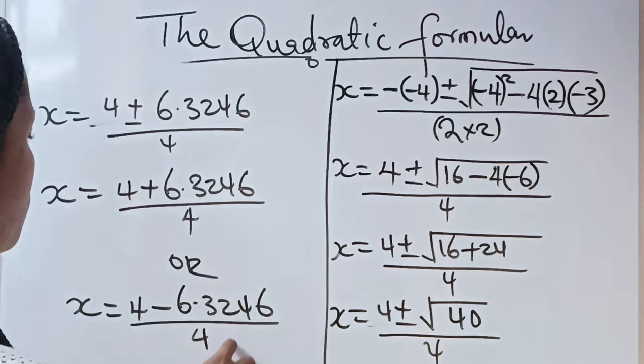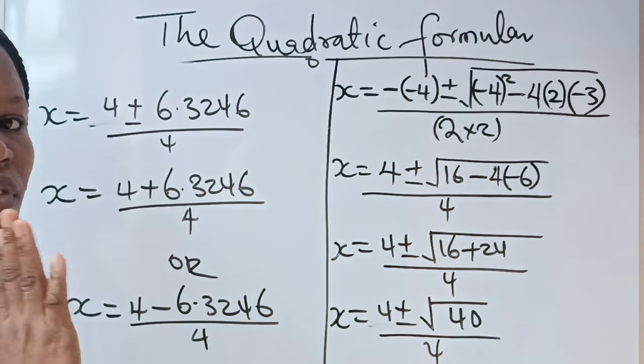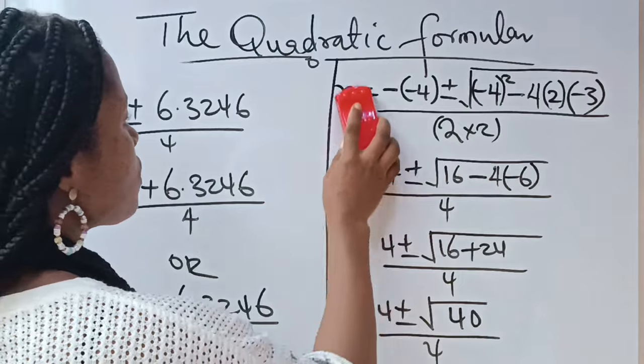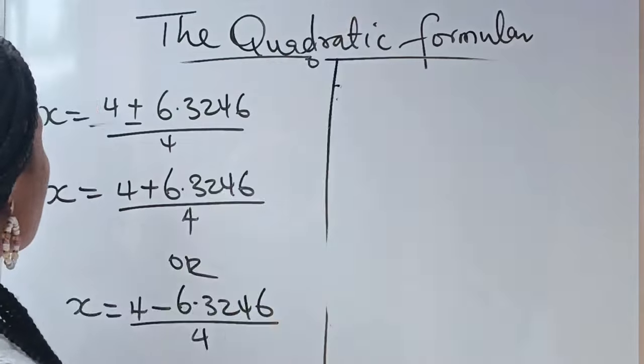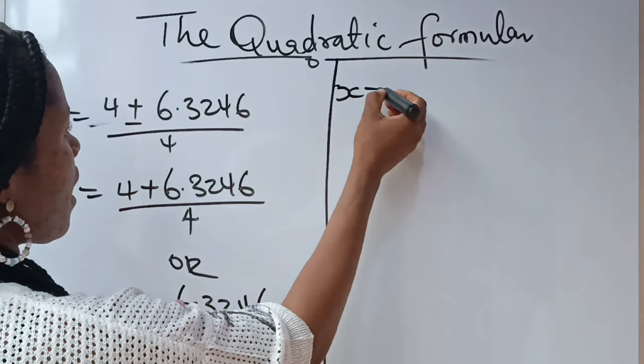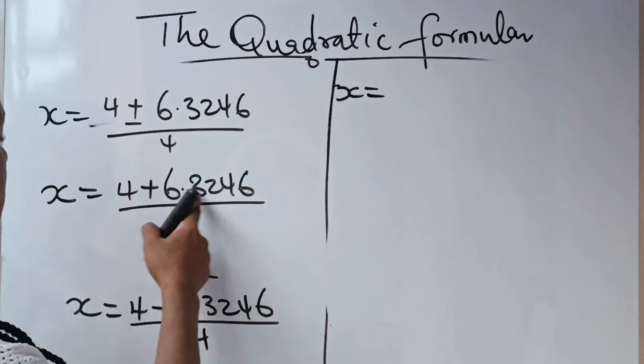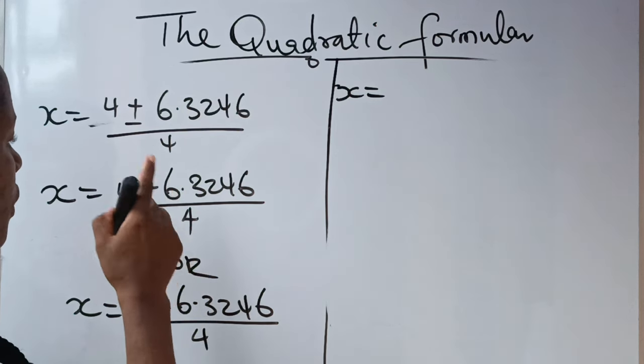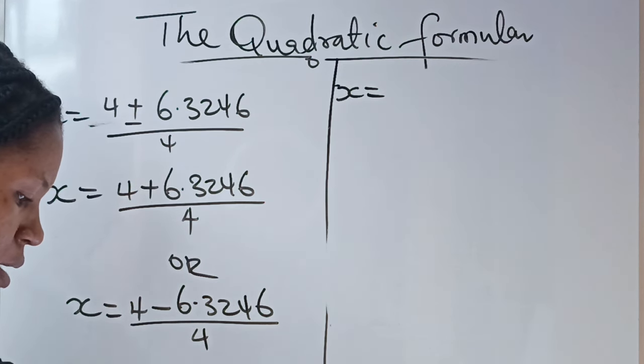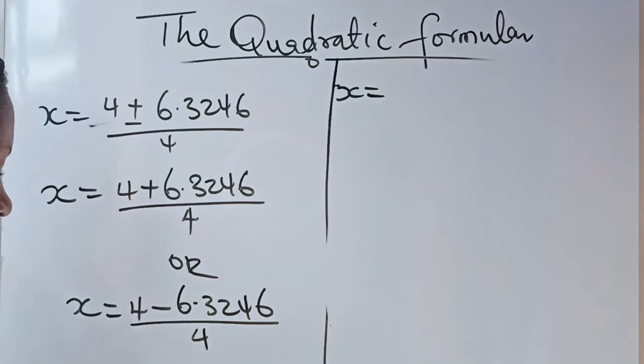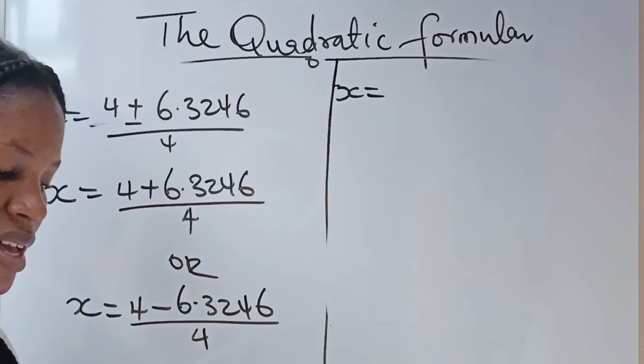Yes, very easy. So, we're now going to solve these two to get the value of our x. So, we now have that our x = 4 + 6.3246, which will give you 10.3246. So, let's solve 10.3246 divided by 4. 10.3246 divided by 4 will give you 2.5812.